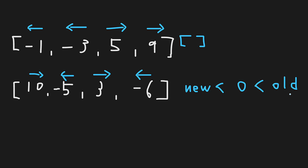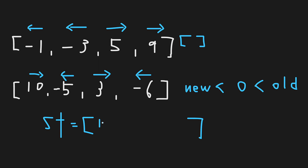But how can we keep track of the old asteroids? It's simple — we use a stack. Every time we find an asteroid, we check the condition. If the asteroid remains, we add it to the stack. So first, we find 10. Since it's the first asteroid, no collision happens, so we push 10 onto the stack.